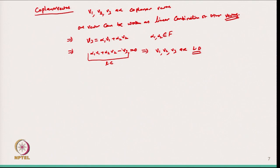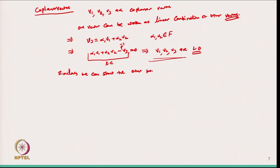Since the coefficient of V3 is -1 (non-zero), the vectors V1, V2, V3 are linearly dependent. Conversely, if V1, V2, V3 are linearly dependent, we can show that one vector is a linear combination of the other two, which means they lie in the same plane — hence they are coplanar vectors.